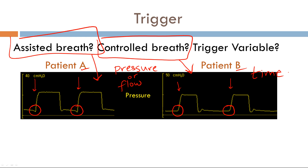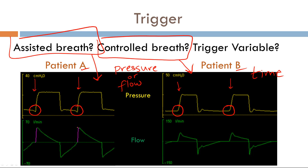Taking this a step further: in Patient A, since we have an assisted breath with a pressure or flow trigger variable, how do we know which one it is? On the Servo-i ventilator, if you look at the flow scalar, there is a pink line. That pink line designates what the trigger variable is. In this case the trigger variable is flow because the operator set it that way. The operator can also set it to pressure, in which case the pressure scalar line would be highlighted pink. For Patient B, there is no pink line on either scalar, confirming the trigger variable is time.